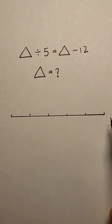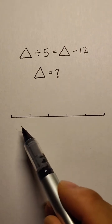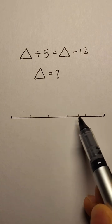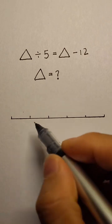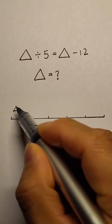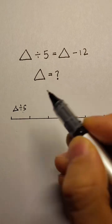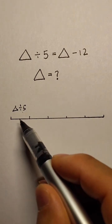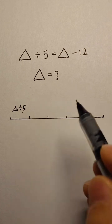We make the whole line represent the triangle. We make 5 equal sections. One section will be triangle divided by 5. This is the same as triangle minus 12.